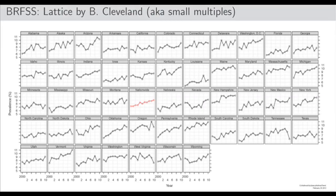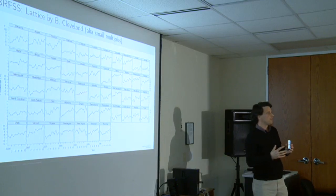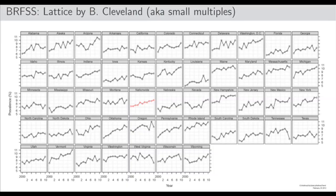An audience member asked how the color change levels are chosen. That's an excellent question, and there's a lot of literature on it. I chose quantiles — so there is the same number of states in each color cell. There's a lot of discussion on which is the best way; it can be linear or non-linear. I just did a non-parametric selection here.